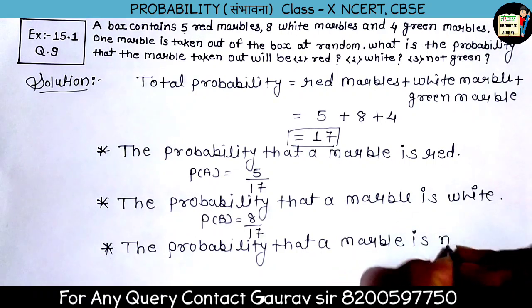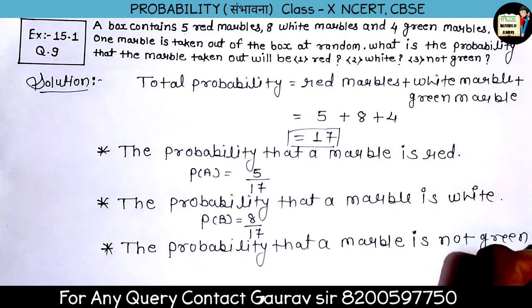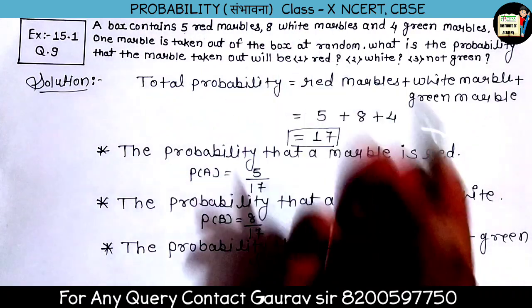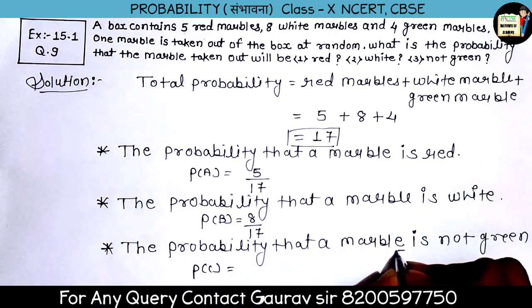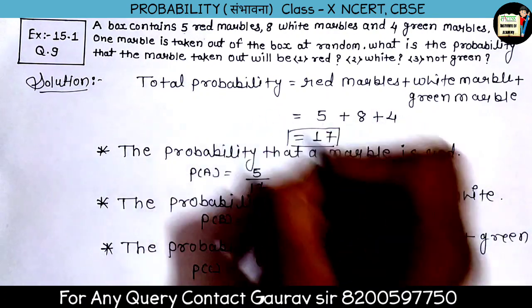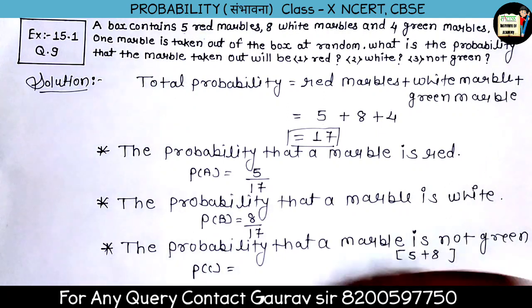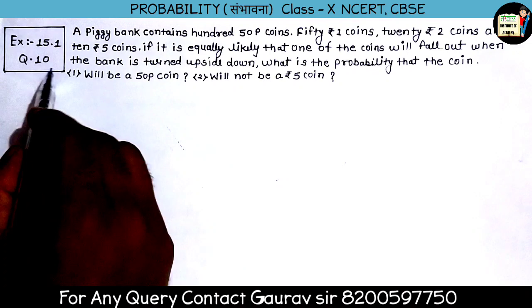The marble is not green, so it should be red or white. P(C) equals — you can add both: 5 plus 8, which gives 13 upon 17. That is the answer for this question.